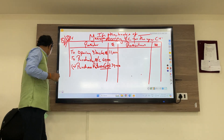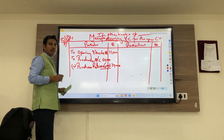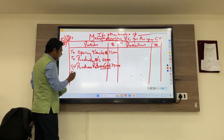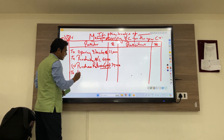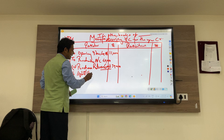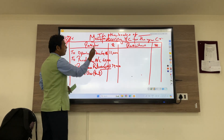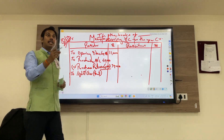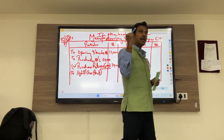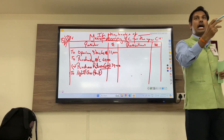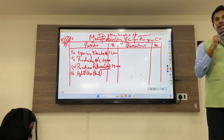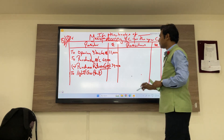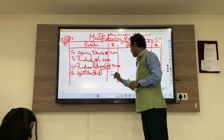The next entry is lights, gas, and factory expenses. This refers to electricity and gas expenses incurred at the factory, amounting to ₹2,000 rupees. Since these are factory-related expenses, they will be recorded on the debit side of the manufacturing account.